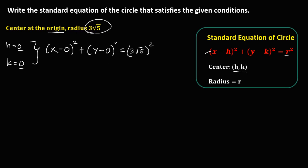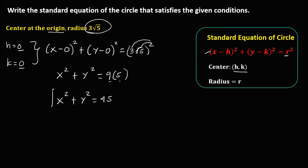Simplify: x minus 0 squared is the same as x squared, plus y minus 0 squared is the same as y squared. Distribute the exponent: 3 squared is 9, times square root of 5 to the power 2 — just omit the radical, so times 5. Simplify: x squared plus y squared equals 9 times 5, which is 45. This is now the standard equation of the circle.